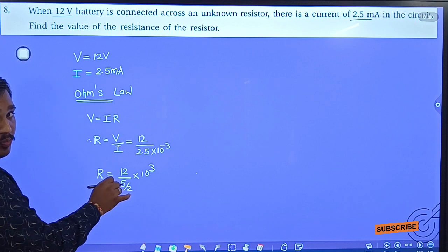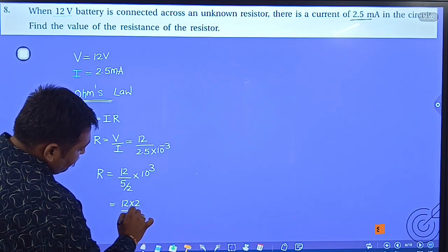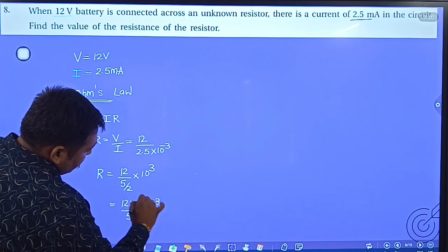Okay, 2 which is the denominator of denominator will go to numerator. So 12 into 2 upon 5, 10 to the power 3.